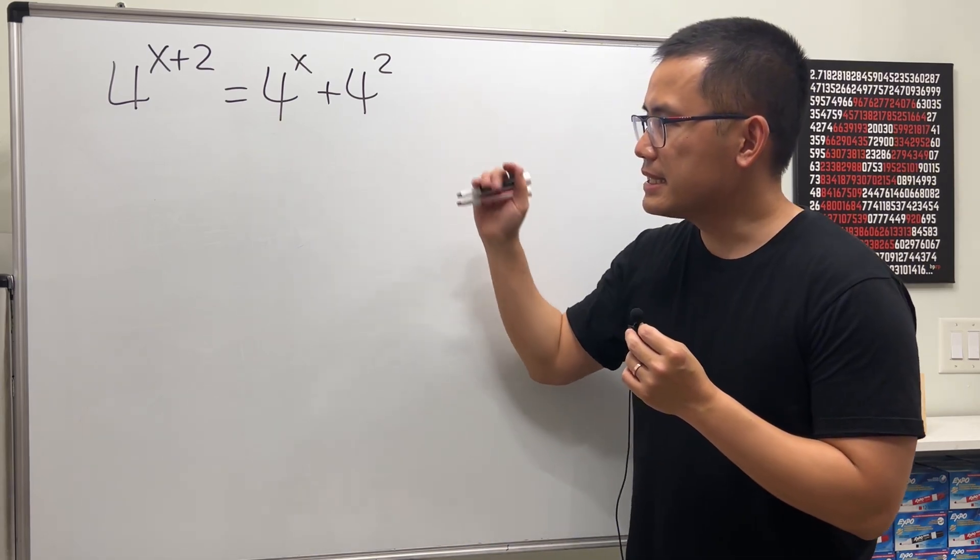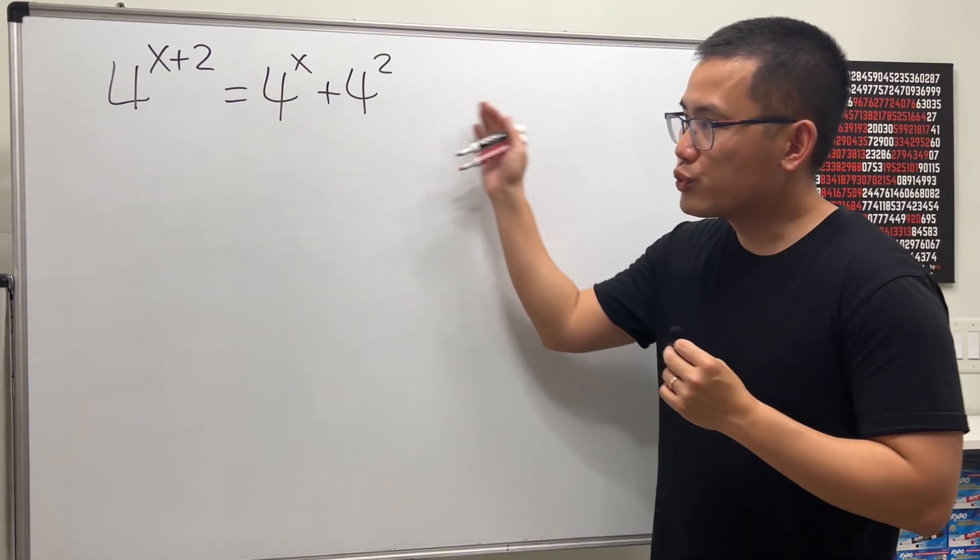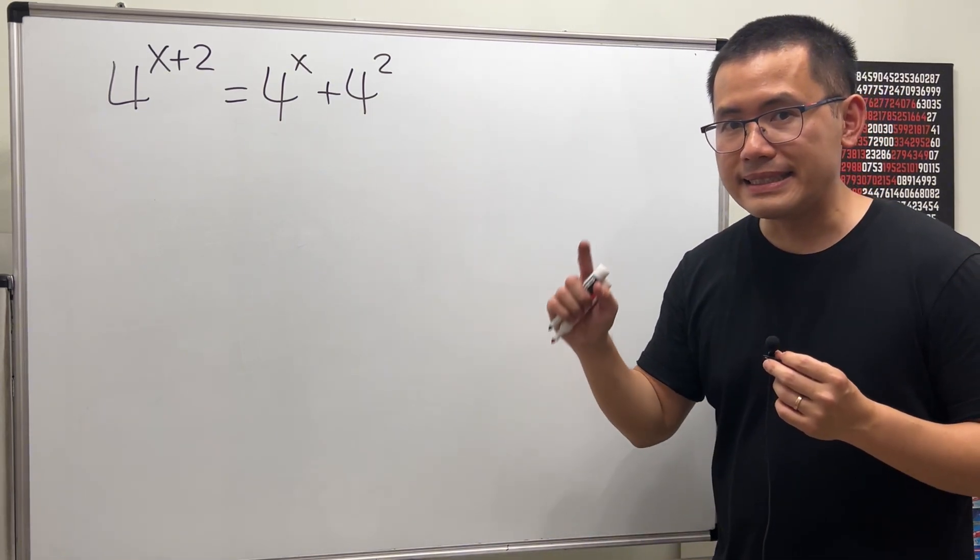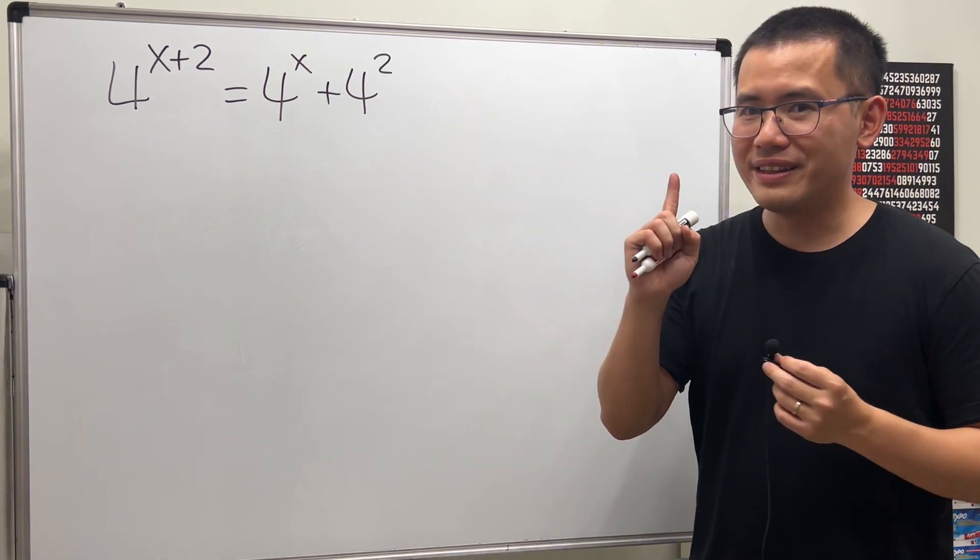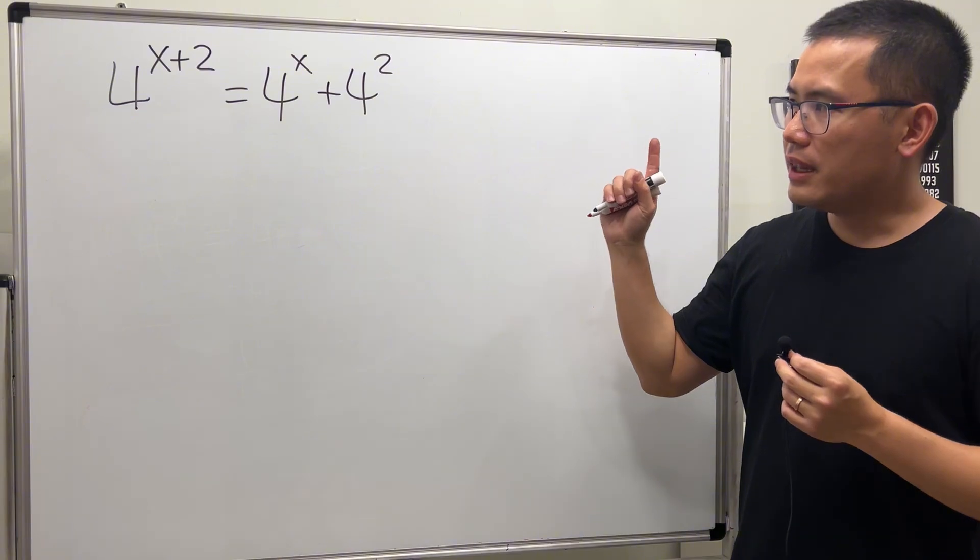This is not an identity. It's not true for all x values, but it's an equation, meaning it's true for - in fact here we have one x value. Let's see how we can solve it.